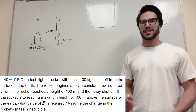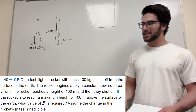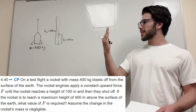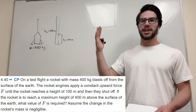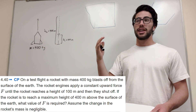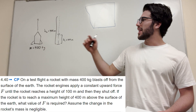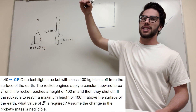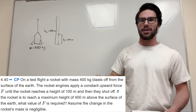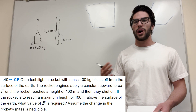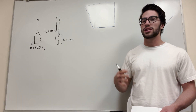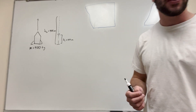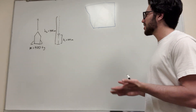What's up Cal gang? Alright, so we got some problems here. This one is asking: we got a rocket that's shooting up, it goes 100 meters up, its engine shuts off, then it goes up another 300 meters, then it stops and starts to fall back down. It wants to know how much force is required for that whole system to happen. So how are we going to do that? Let's figure it out.